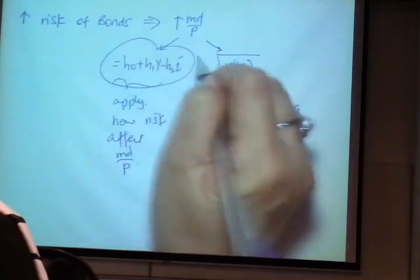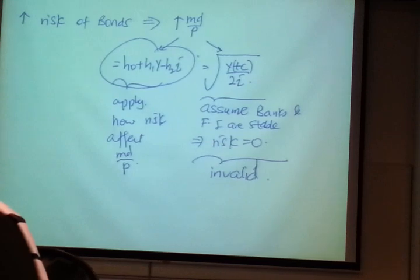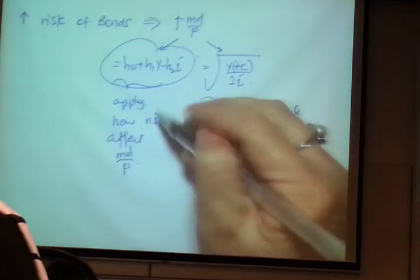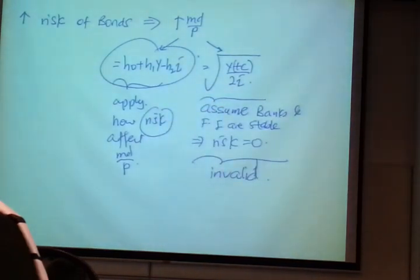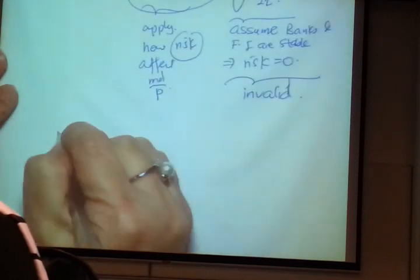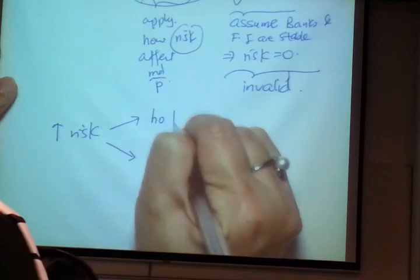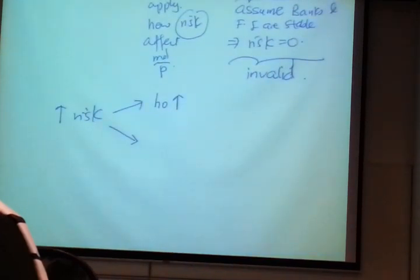One of the principal assumptions of Baumol-Tobin is that banks and FIs are very stable — you will put all money in the bank and hold most of your wealth as financial assets, so risk is not critical and is assumed to be 0. But the question involves an increase in risk of bonds. So, looking at the Keynes equation, where is risk? H0 is your minimum money holding because you can't always use cashless transactions. H1Y is your income — you hold money for transactions and precautionary motive. H2I is your speculative motive. So where is risk? How do you infuse risk into money demand?